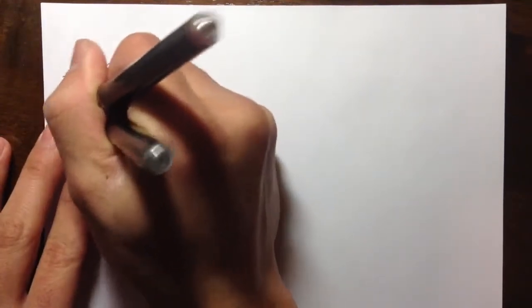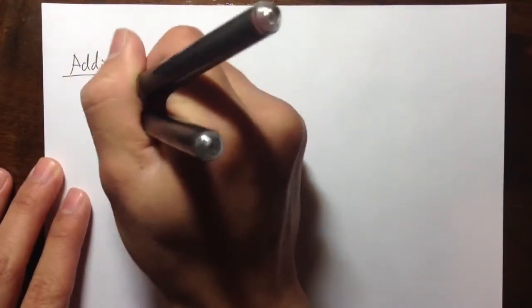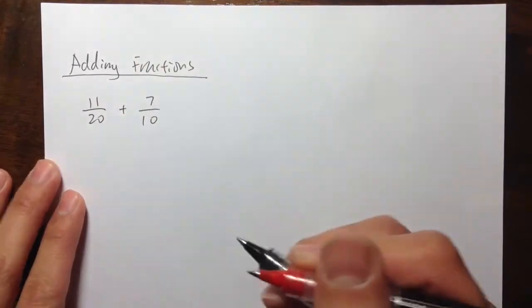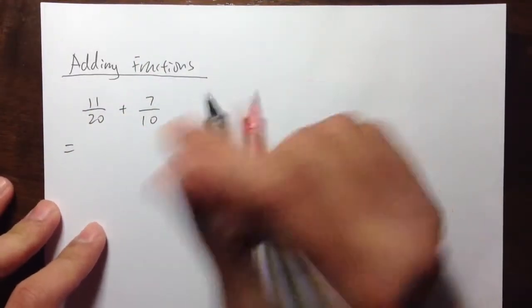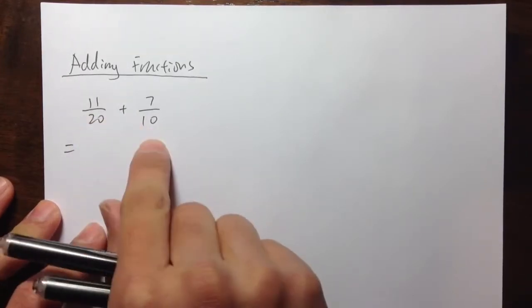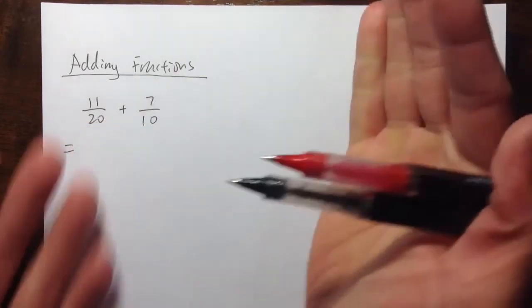Let me give you guys an example first. Let's say I have 11 over 20 plus 7 over 10. And how do you add fractions correctly? Many of the teachers, I think your teacher will tell you that we need to make sure that they have the same denominator first. But in this case, unfortunately, we don't, right?